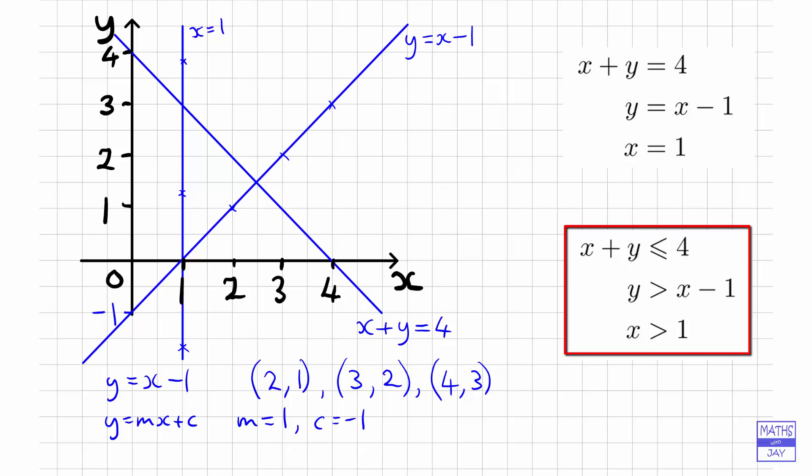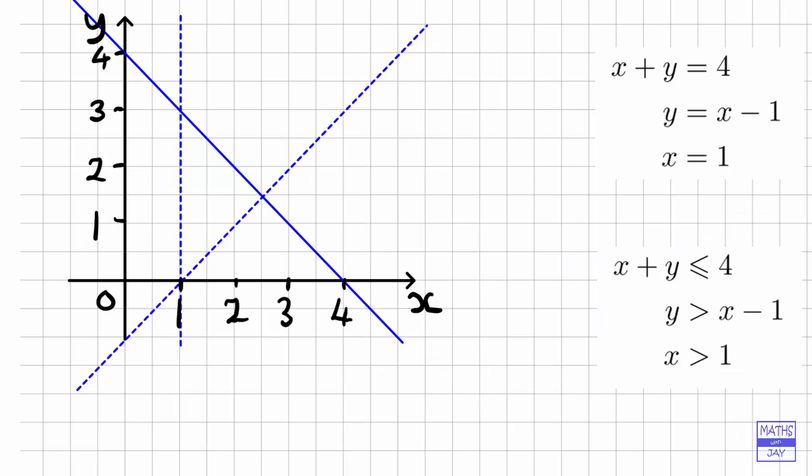Let's have a look at what that will look like. Because in x plus y is less than or equal to 4 we've got the equals, that's a solid line. But the other two have not got equals, so for y equals x minus 1 we've got the line looking like a dotted line, and the same for x equals 1 because we don't want the lines included.